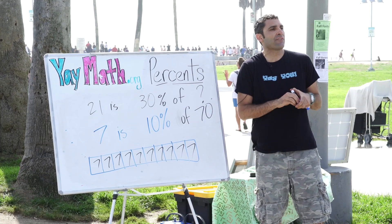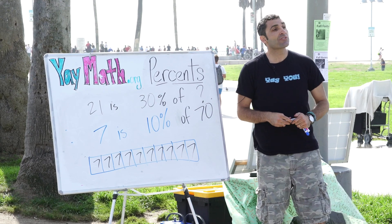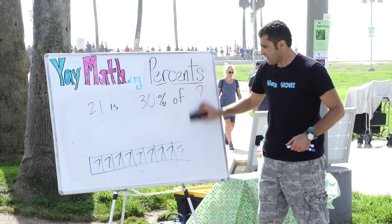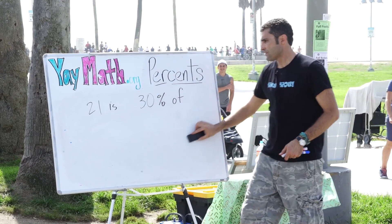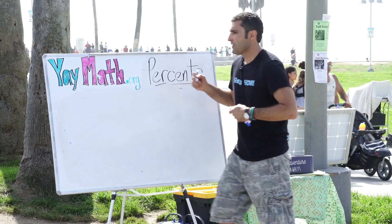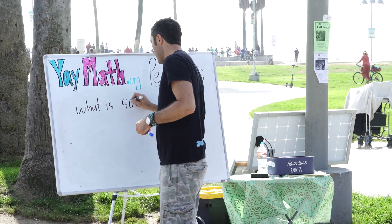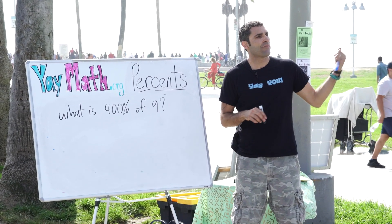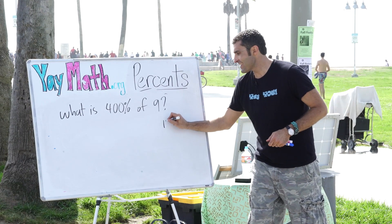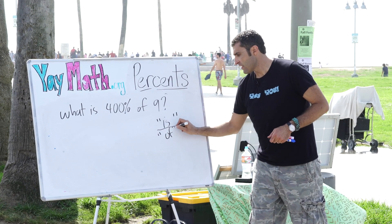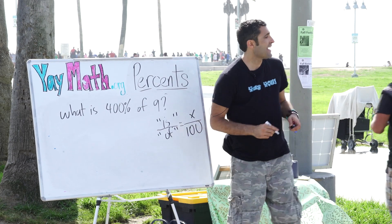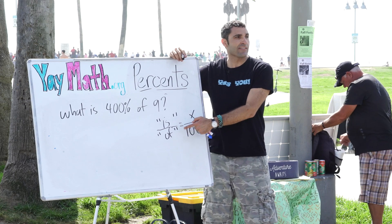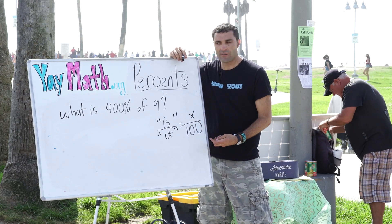I wonder if they teach this in the UK — there is a formula taught in schools. It's not my favorite thing, but I'll share it. It goes like this: 'is over of equals x over 100.' In other words, anytime you see the 'is' word it goes in the numerator, anytime you see the 'of' word it goes in the denominator, and anything over 100 is the percent.